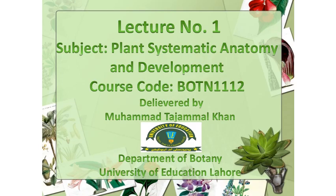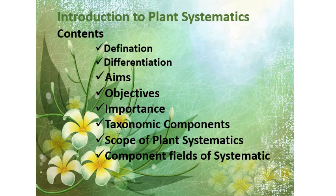Here we have the content of this lecture. First, we discuss the definition. Then we have a differentiation between two similar terms: plant taxonomy and plant systematic. Then we reveal the aims, objectives, and importance of plant systematic. After that, we discuss the taxonomic components of plant systematic. Then we reveal the scope of plant systematic, and in the end, we discuss the component fields of plant systematic.